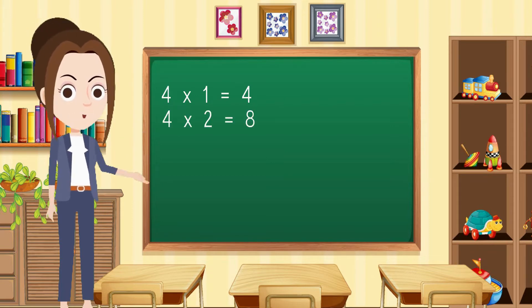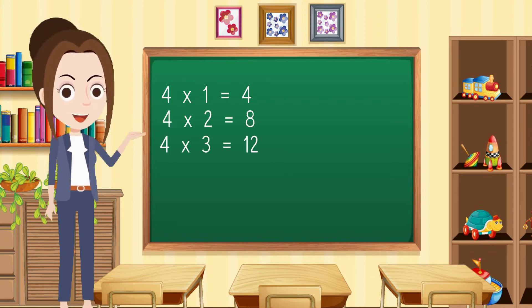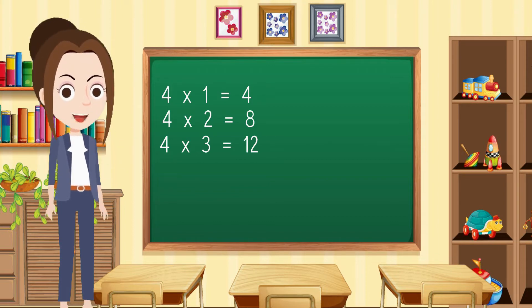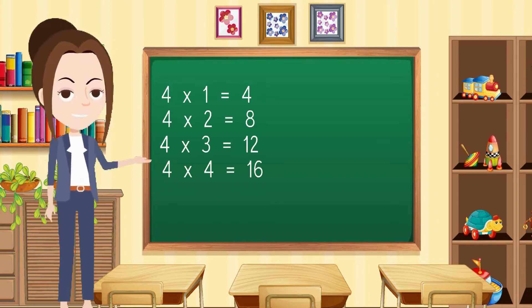Four twos are eight. Four threes are twelve. Four fours are sixteen.